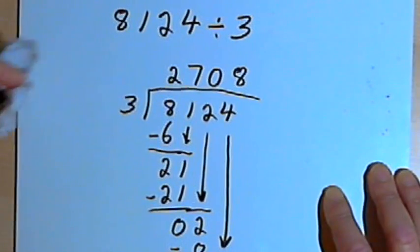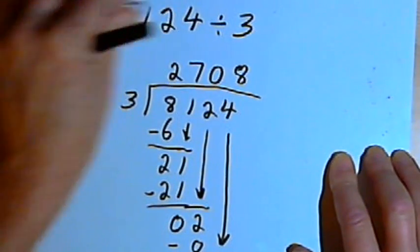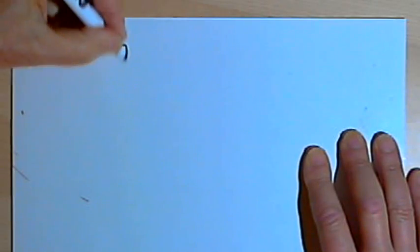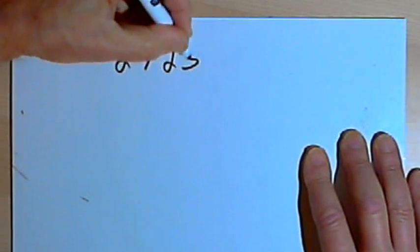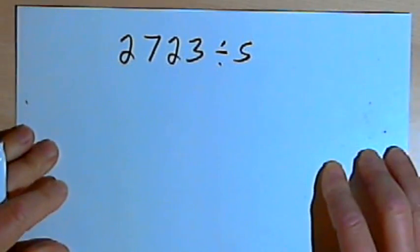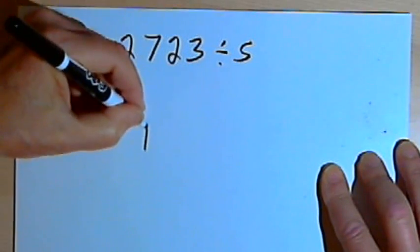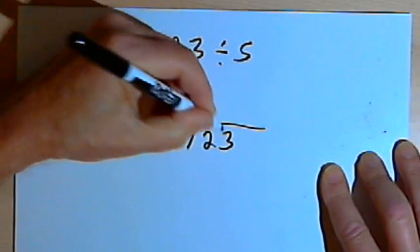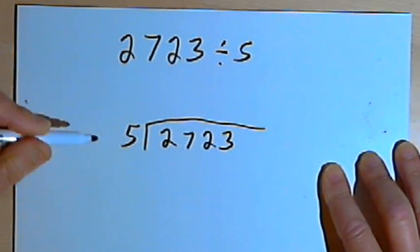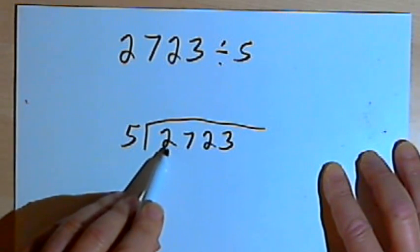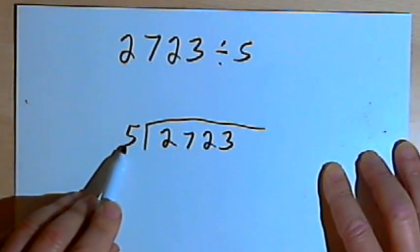And I want to do one more problem. Let's see if I can get a problem where we end up with a remainder. So let's try 2,723 divided by 5. So I'll set that up. I've got that box. 2,723. 5 is my divisor. So let's see. I want to divide 5. I want to see if I can divide it into the first digit. Well, I can't divide 5 into 2, so I'll try the first two digits.